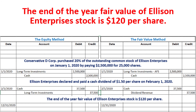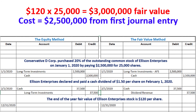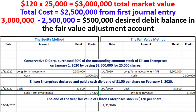Next, the end-of-year fair value for Ellison Enterprises stock is 120 dollars per share. For the fair value method, we need a journal entry for the fair value adjustment. The total market value is 120 dollars per share multiplied by the 25,000 shares, which equals three million dollars. The total cost is 2.5 million from the first journal entry. Fair value minus cost gives us five hundred thousand dollars, which is the desired debit balance for the fair value adjustment account.